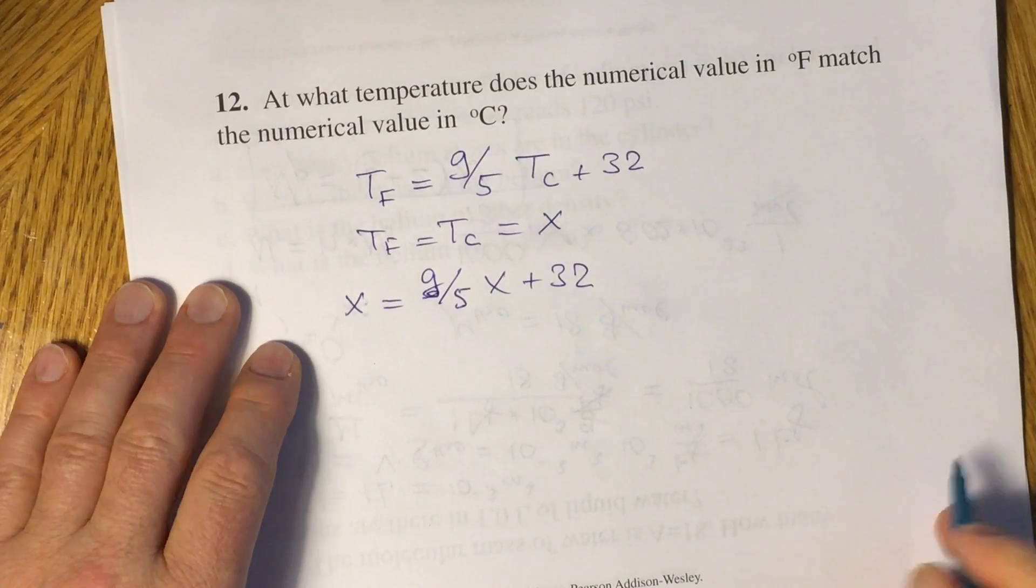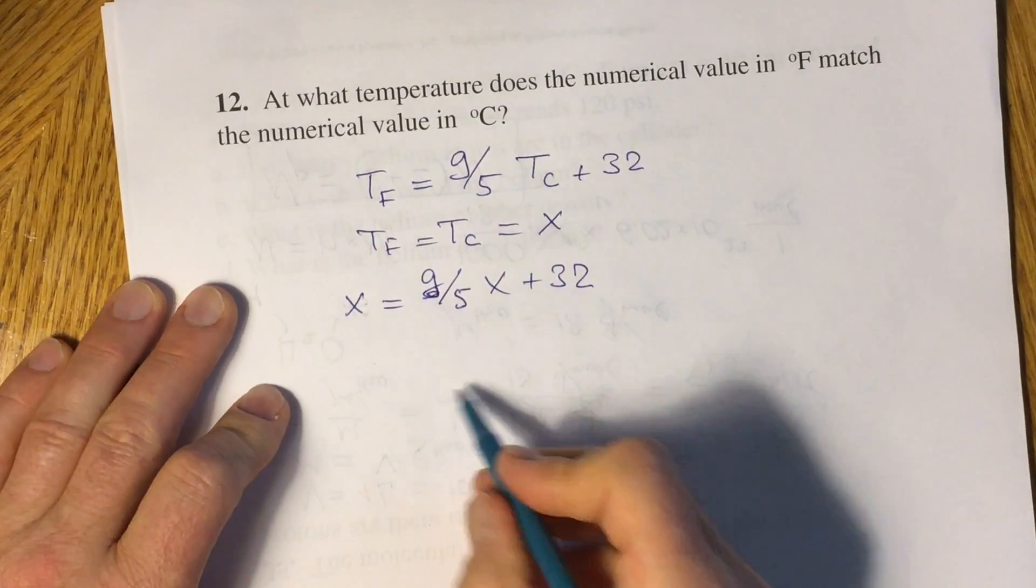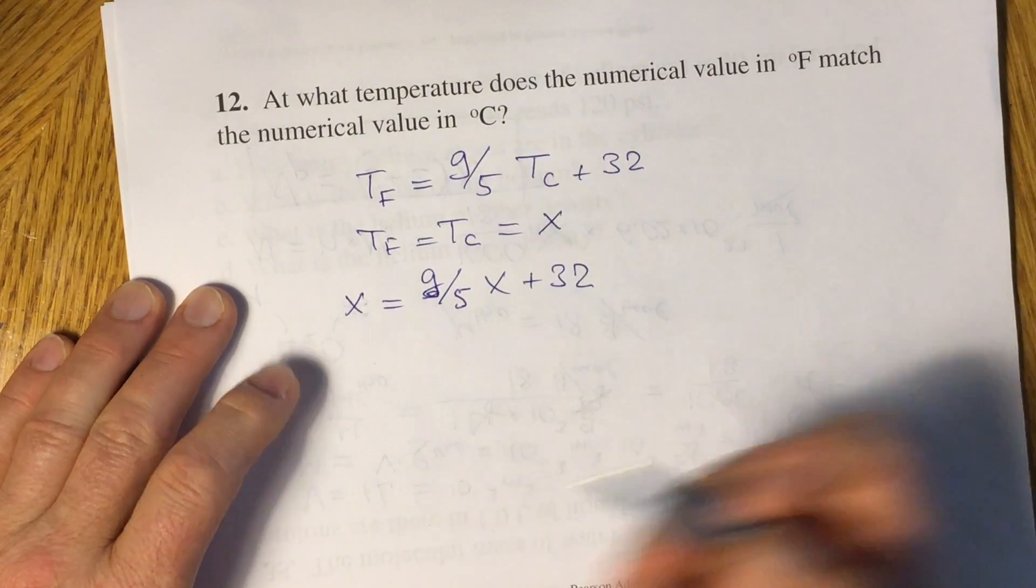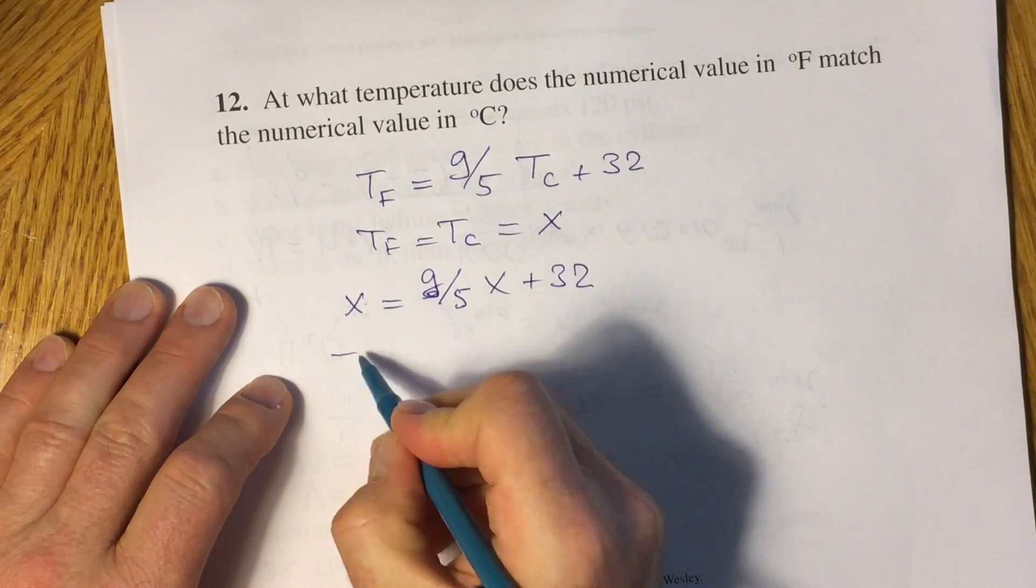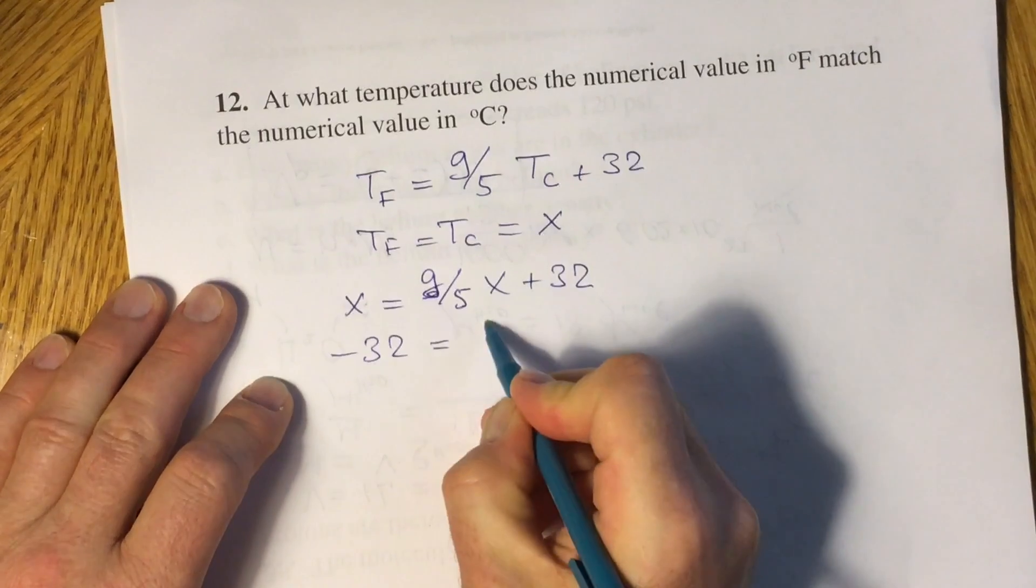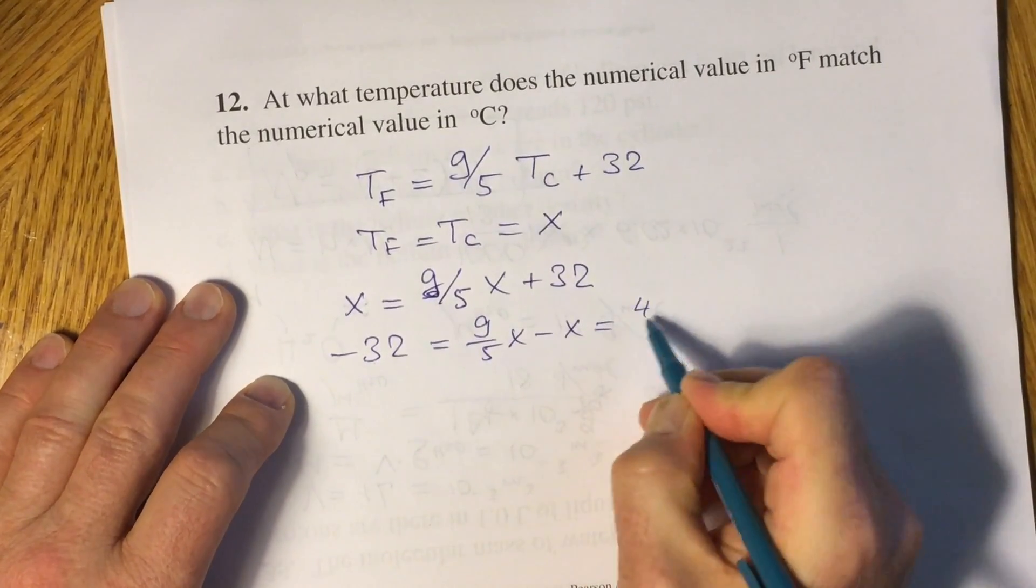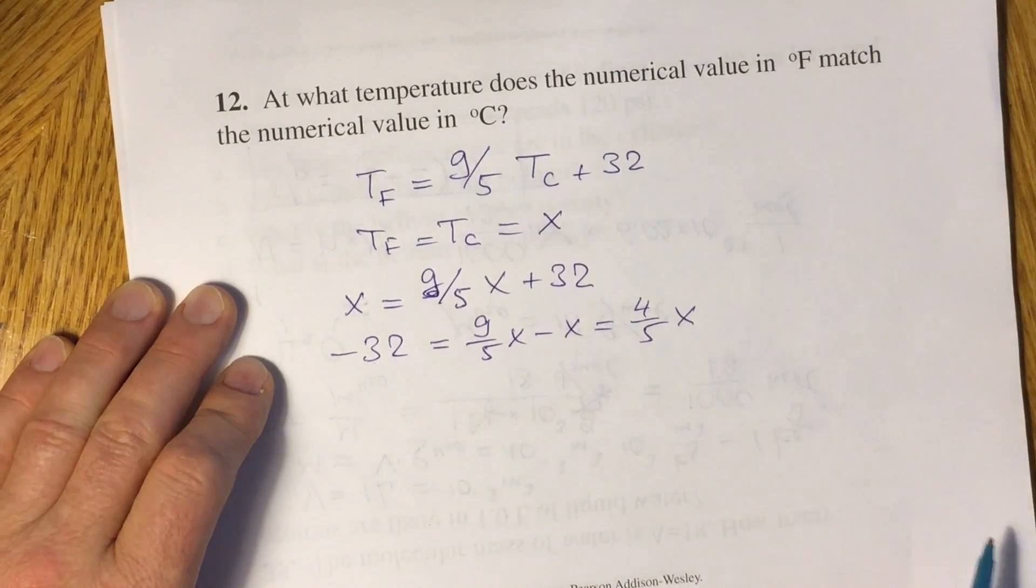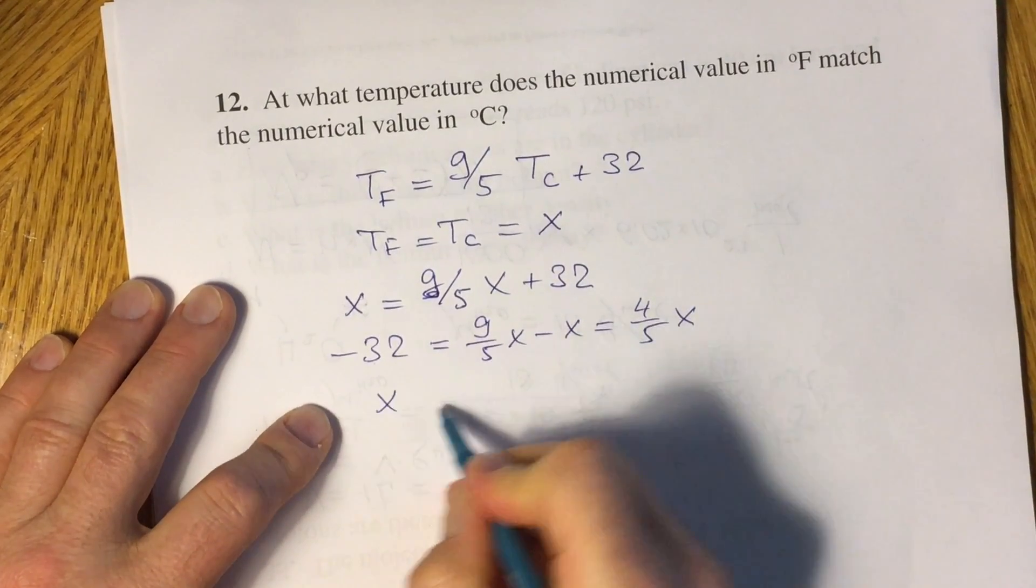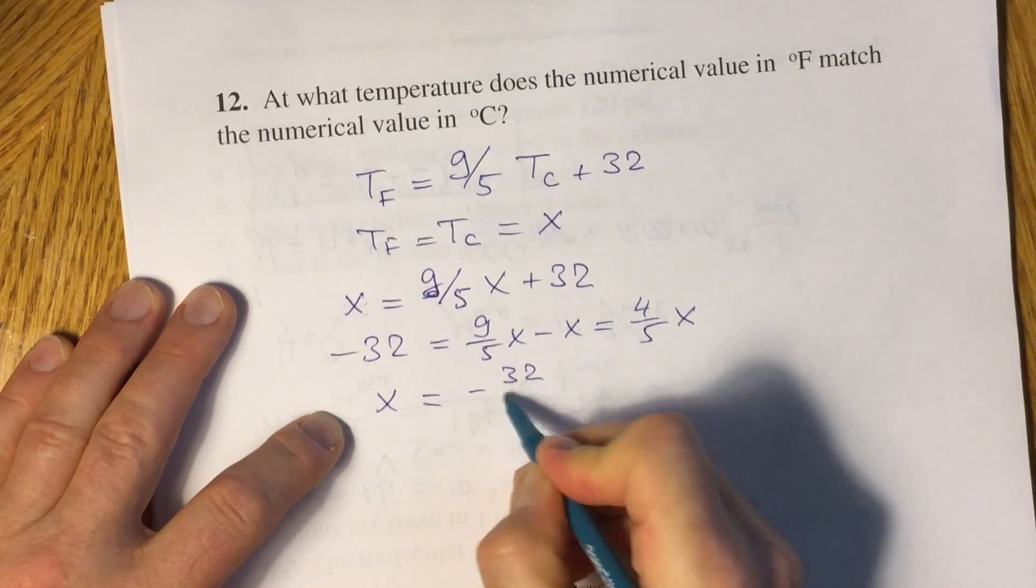To solve this equation, you have to subtract 32 from both sides and x from both sides. So you will have negative 32 from the left, 9/5x minus x gives you 4/5x, and then you have to divide negative 32 by 4.